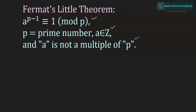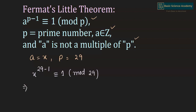Here we have a equals x and p equals 29. Hence, we can write x to the power of 29 minus 1 is congruent to 1 mod 29, which is x to the power of 28 is congruent to 1 mod 29.